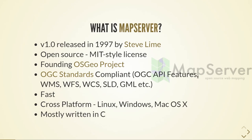So just a quick overview of what MapServer is. It's been around since 1997, created by Steve Lime, who's still one of the major contributors today. It's got an MIT-style license, and it's one of the founding OSGeo projects. It basically serves out data — hence the name MapServer. It's read-only, so it focuses on rendering and serving data, and it covers all the OGC standards: WMS, WFS. It's starting to cover the new OGC API standards, so that's one of the major features of version 8 — the OGC Features API, which is the successor to WFS. It's known for being fast, cross-platform — runs on Linux, Windows, and Mac — and it's mostly written in C, but there's been a move to C++ in the last year or so.